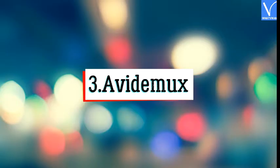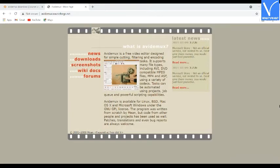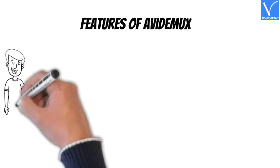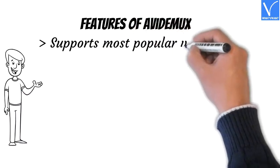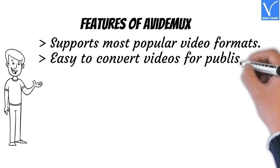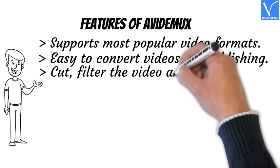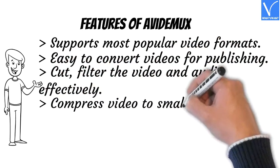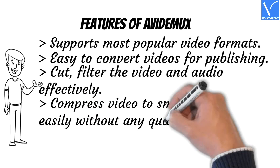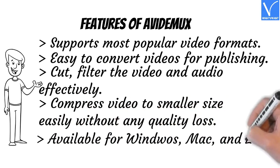Number 3: Avidimux. Avidimux is one of the best video editing and compressing software. It is a free video editing software designed for simple cutting, editing, and video encoding tasks. It supports several file formats and you can automate tasks using projects and job queues. Features: supports most popular video formats, easy to convert videos for publishing, cut and filter video and audio effectively, compress video to smaller size without quality loss, and available for Windows, Mac, and Linux.